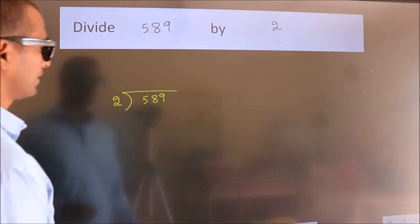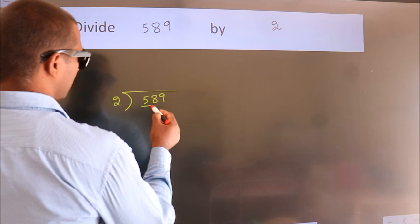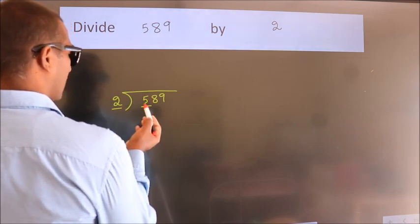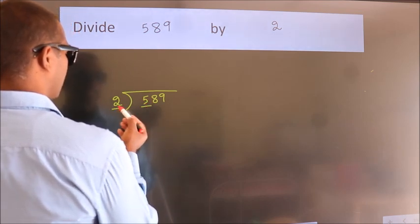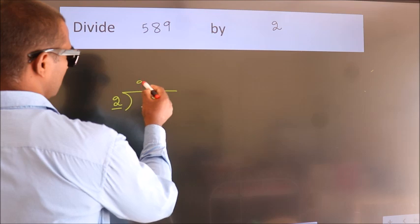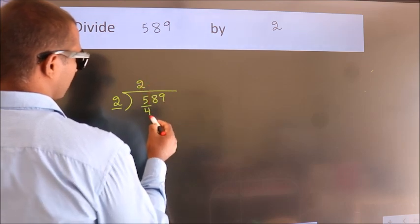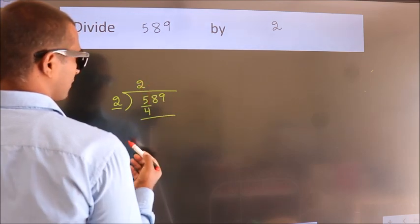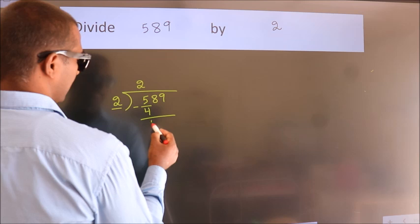Next, here we have 5, here 2. A number close to 5 in 2 table is 2 times 2, which is 4. Now we should subtract. We get 1.